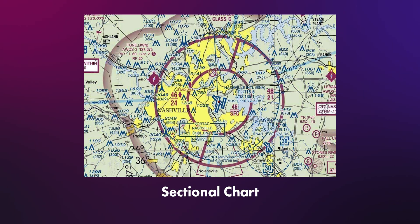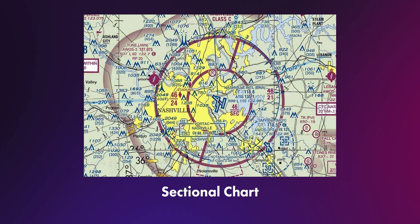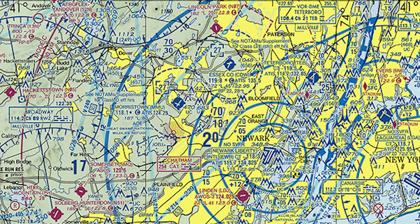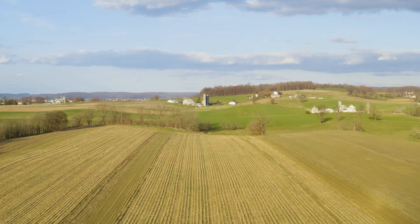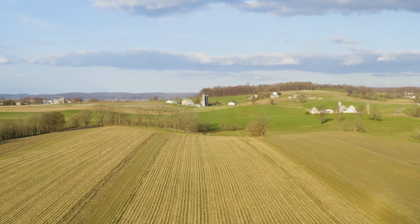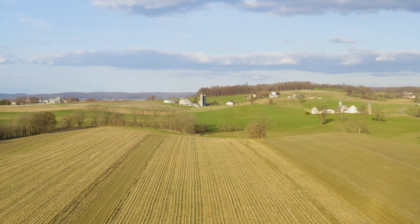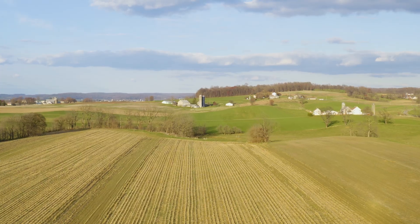Let's be honest — most drone pilots don't pull out a sectional chart every time they fly. But if you're taking your FAA Part 107 remote pilot test, you pretty much have to know how to read them. And honestly, I think it's a skill that goes way beyond just passing the exam. Learning how to interpret a sectional chart will make you a safer pilot, give you a better sense of where you can and can't fly, and deepen your understanding of how our airspace works.